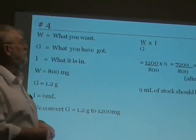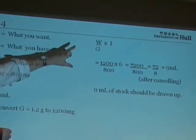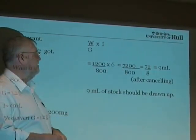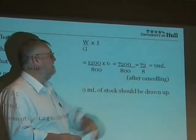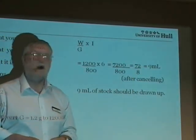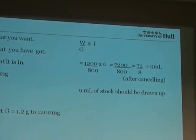Now substitute into the formula. W is 1200, G is 800, and I is 6. Six lots of 1200 is 7200. 7200 over 800 becomes 72 over 8 after some cancelling, and 8 into 72 is 9. So 9 mL of stock should be drawn up.